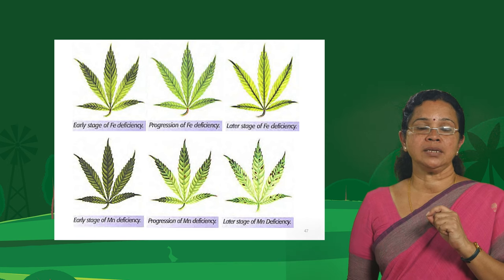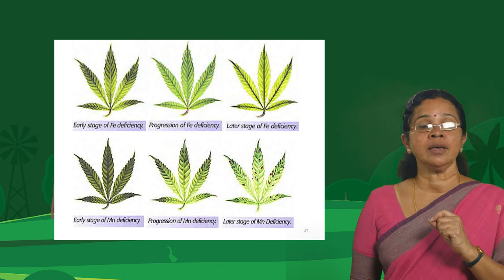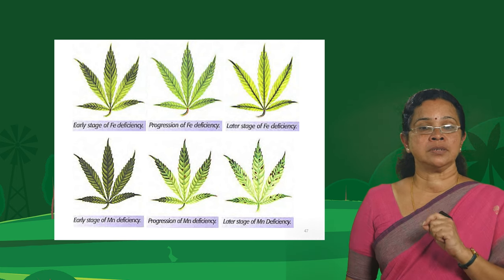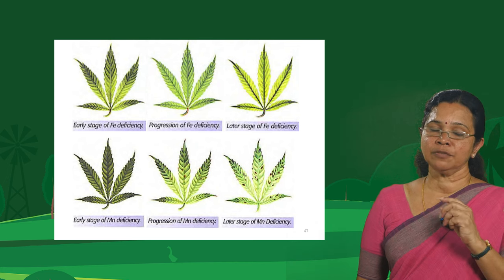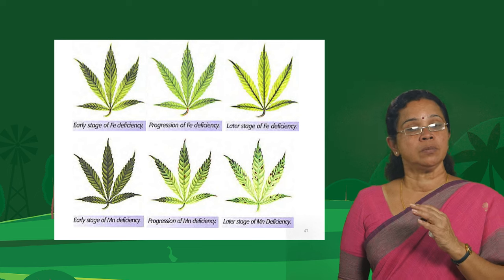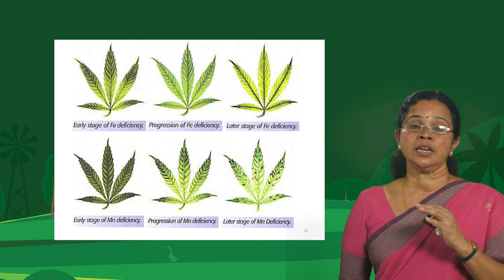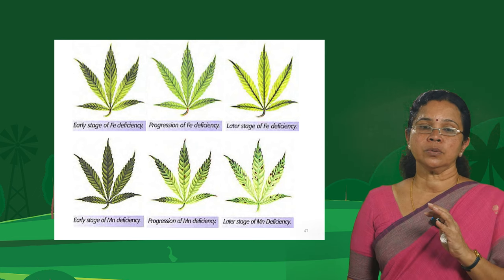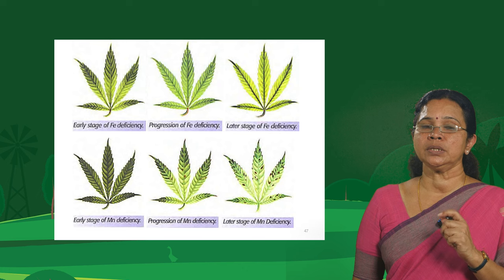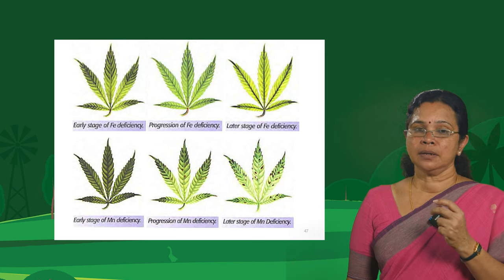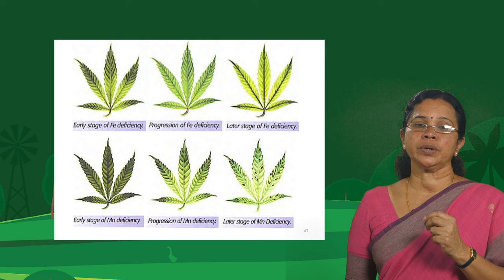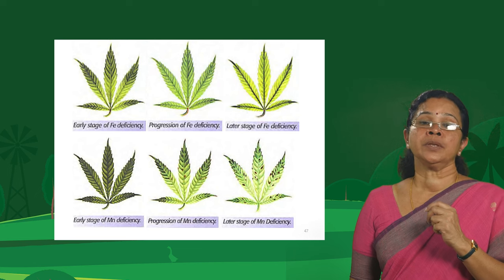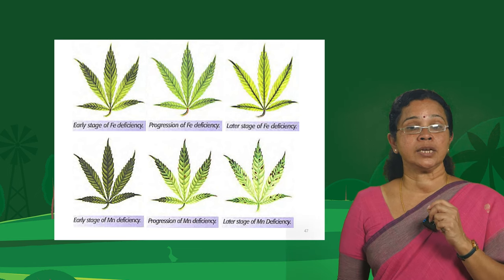In iron deficiency, the major veins remain green and the other areas become yellow, tending toward whiteness. Whereas in manganese deficiency, the major and primary veins remain green and the intervenal areas turn chlorotic with the appearance of necrotic spots. It is slightly difficult to distinguish between these two since both appear in younger leaves as intervenal chlorosis — but the key distinction is that iron deficiency tends toward whiteness while manganese deficiency shows necrotic spots.